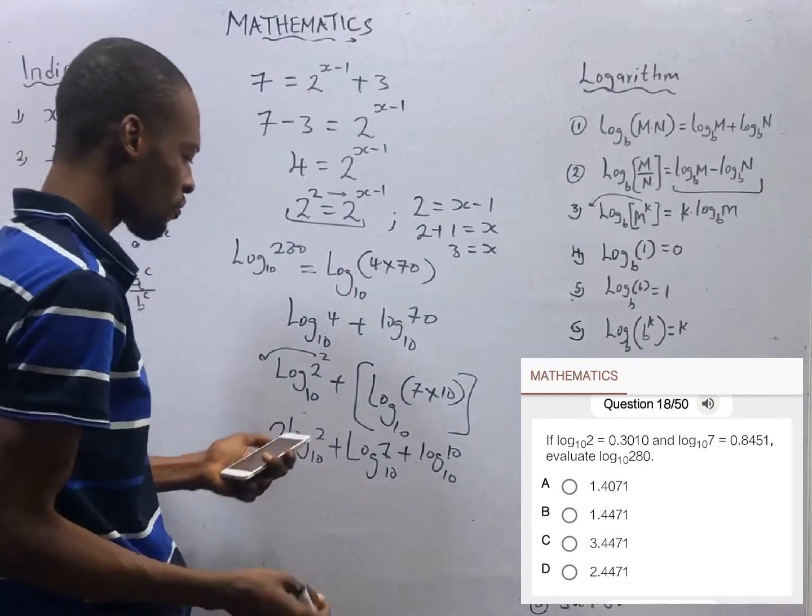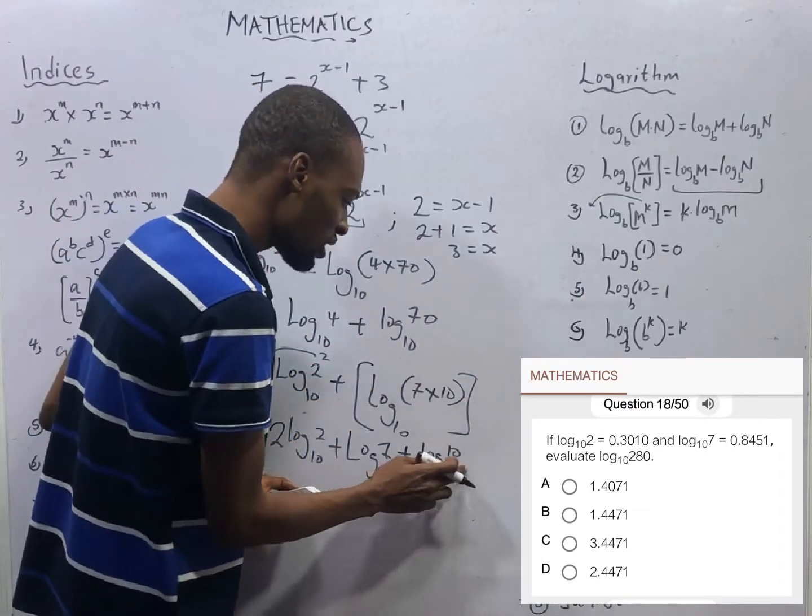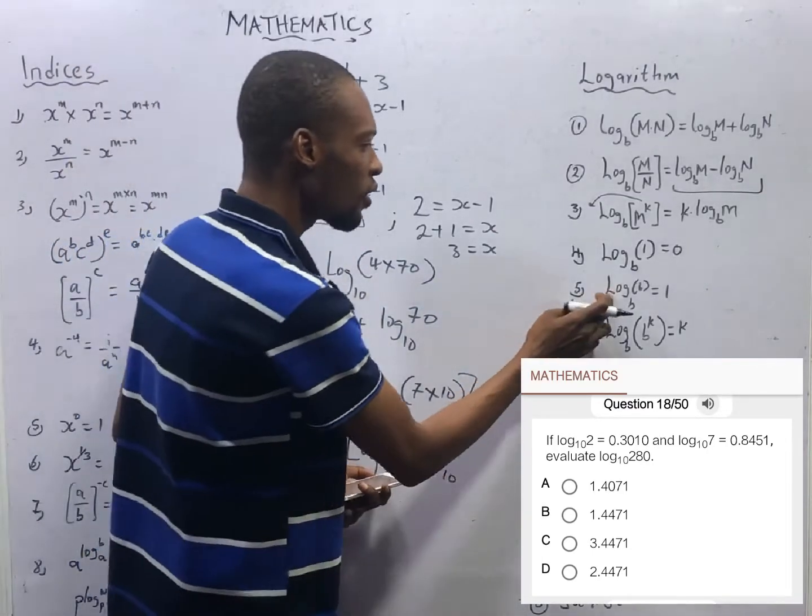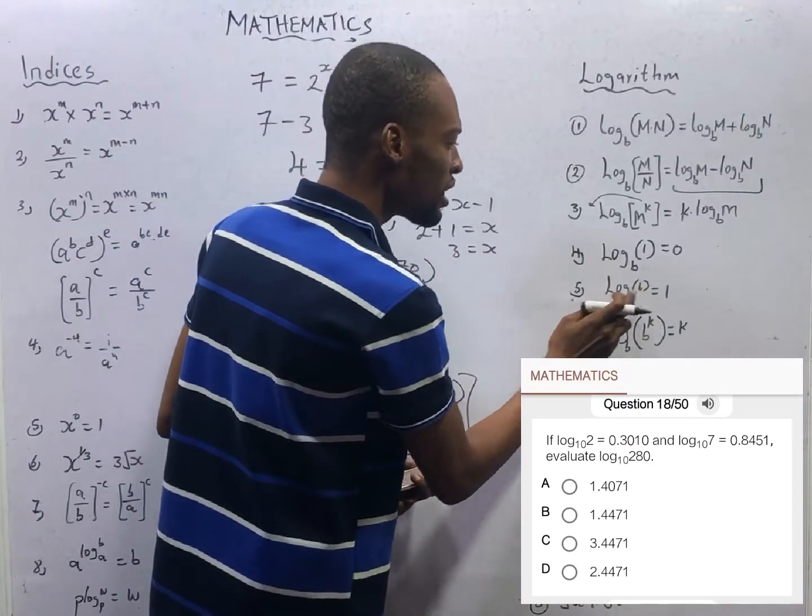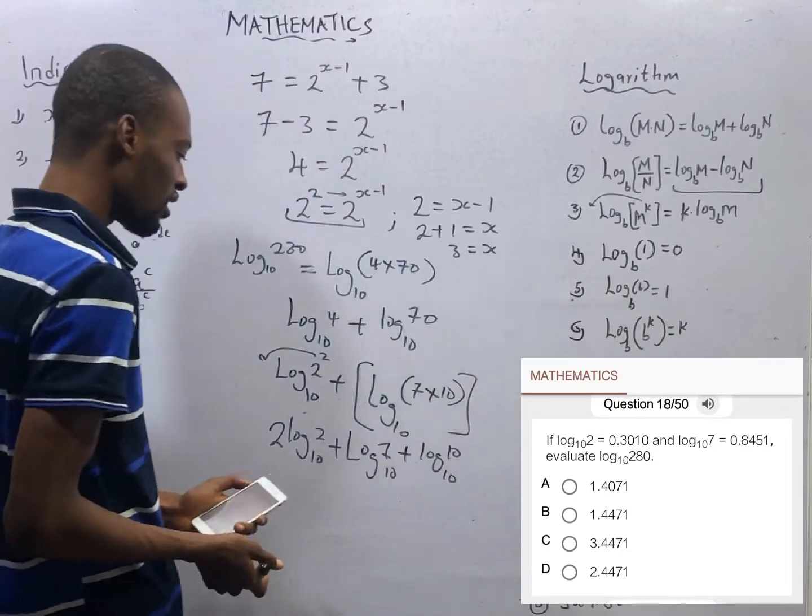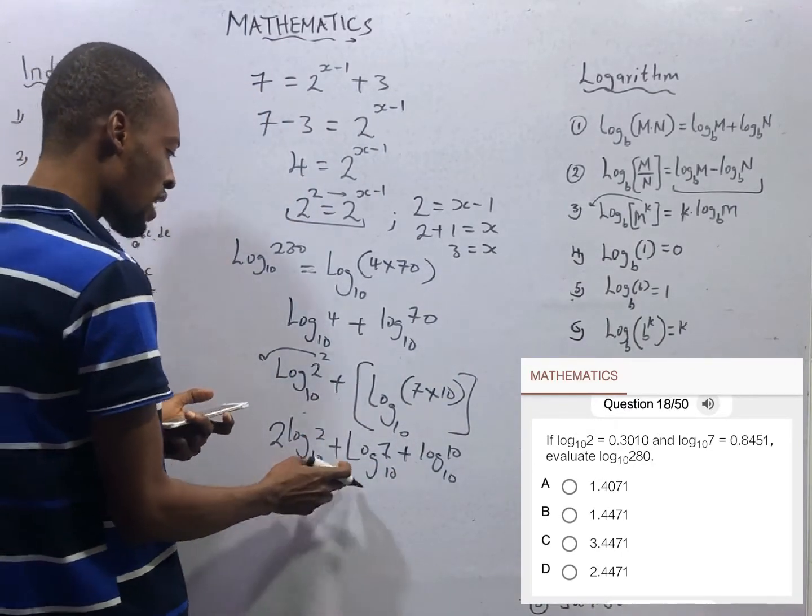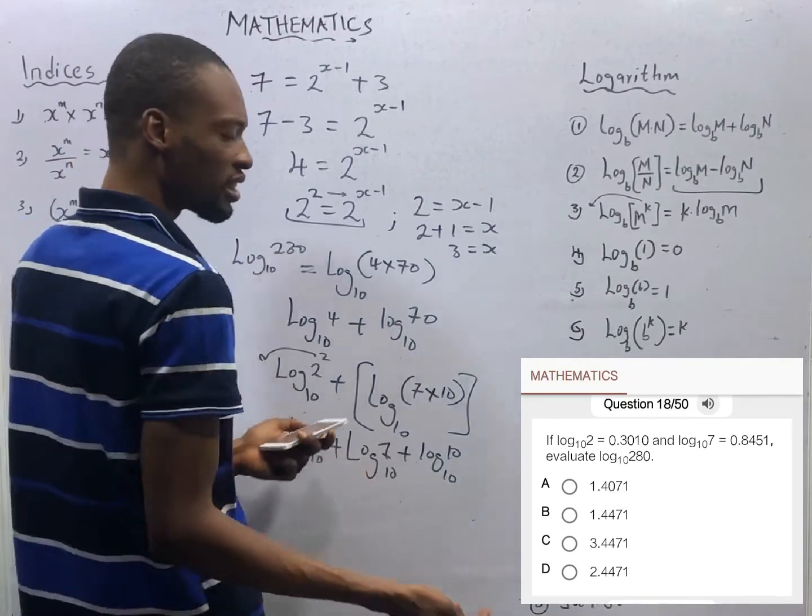With this, food is ready. Why did I say that food is ready? Because log 10 to base 10 is 1. Any log written to the base, if the base and the numbers are the same, then you get 1 as the answer. And we have log 2 with base 10 already given, we have log 7 with base 10 given.